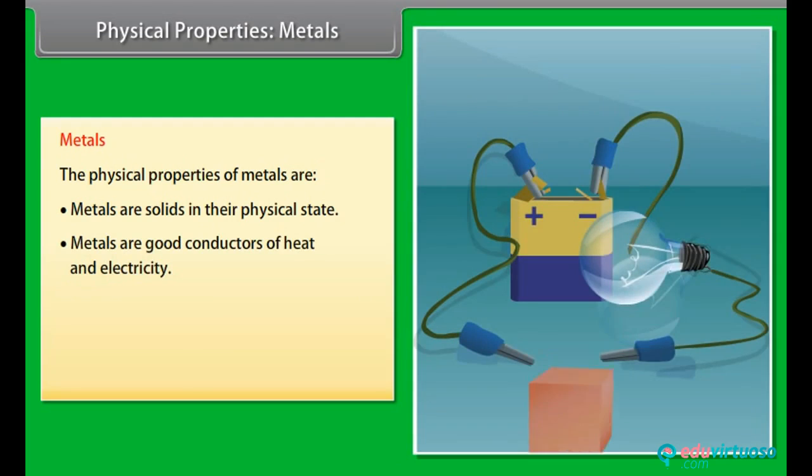Good conductors of heat and electricity. Metals are good conductors of electricity as they have free electrons. For example, silver and copper are the best conductors of heat and electricity, whereas lead is the poorest conductor of heat.